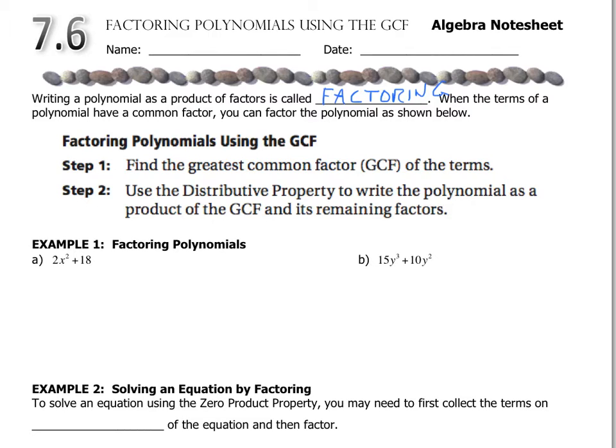In this case, we're going to use the distributive property to rewrite the polynomial as a product of the GCF and the remaining factors after we've taken that out. And when I say take it out, I mean divide it out.